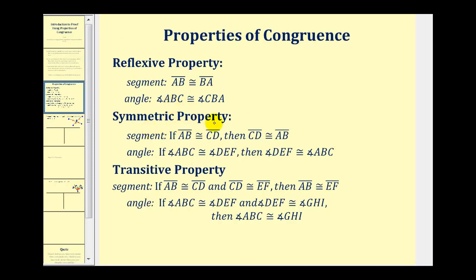For the symmetric property of congruence, the order in which two congruent segments or congruent angles are listed does not change their congruence. The transitive property is kind of like a link — if segment AB is congruent to segment CD and segment CD is congruent to segment EF, then segment AB is congruent to segment EF. And we can do the same with angles.